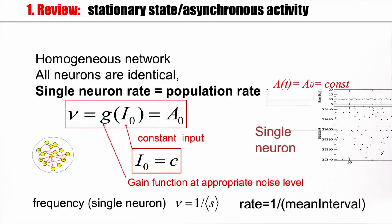Now, the argument so far did not make any assumption about the type of activity. But if we assume that we are in a stationary state, stationary state means that the population activity is more or less constant as a function of time, then in this case, since all neurons are the same, the spatial average, which gives you the population activity, is the same as the temporal average. And that means that the population rate or the population activity is equal to the single neuron rate.